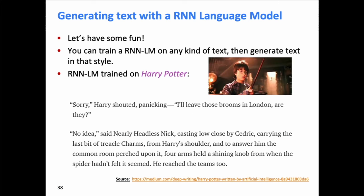An RNN trained on Harry Potter books generated: 'Sorry, Harry shouted, panicking. I'll leave those rooms in London. Are they? No idea, said nearly headless Nick, casting low close by Cedric, carrying the last bit of treacle charms from Harry's shoulder. And to answer him, the common room perched upon it. Four arms held a shining knob from when the spider hadn't felt it seemed. He reached the teams too.' It's fairly fluent, sounds tonally like the books, and even captures character attributes — Harry often panics. But there's a run-on sentence, nonsensical elements like 'treacle charms,' and overall incoherence.